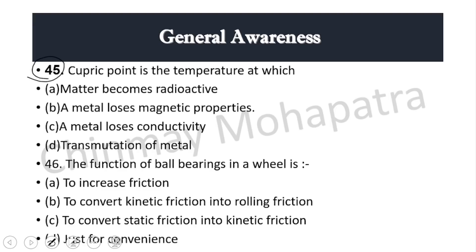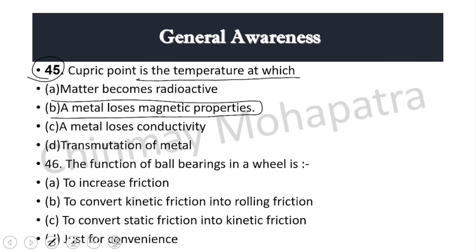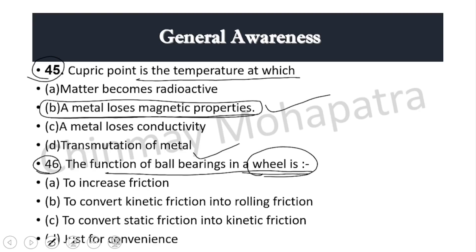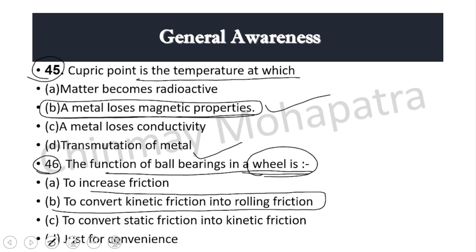Question 45: Curie point is the temperature at which a metal loses its magnetic properties. Question 46: The function of ball bearings in a wheel is to convert kinetic friction into rolling friction, so that the wheel rotates more easily.